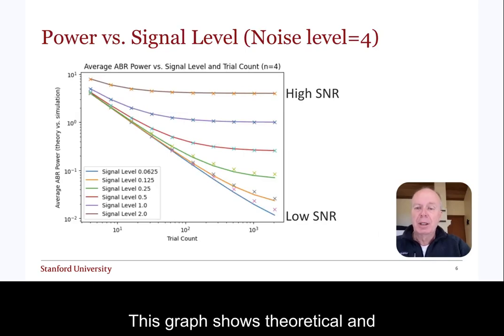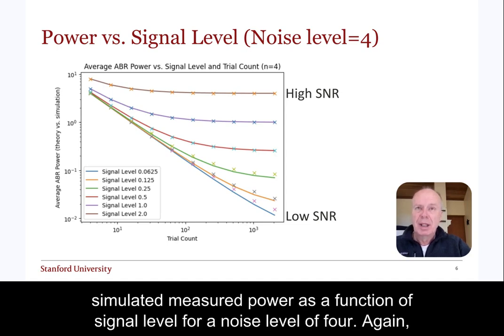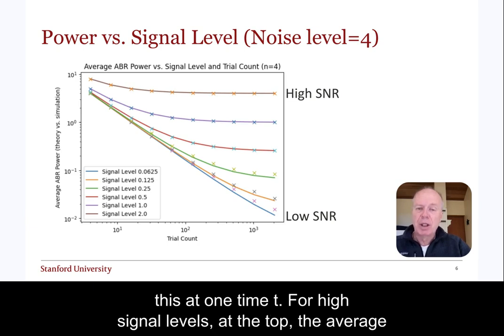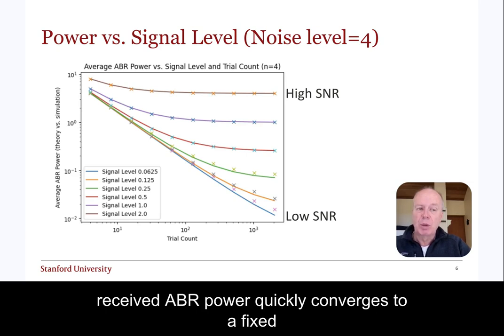This graph shows theoretical and simulated measured power as a function of signal level for a noise level of 4. Again, this is at one time t. For high signal levels at the top, the average received ABR power quickly converges to a fixed point, here the signal level squared of 4.